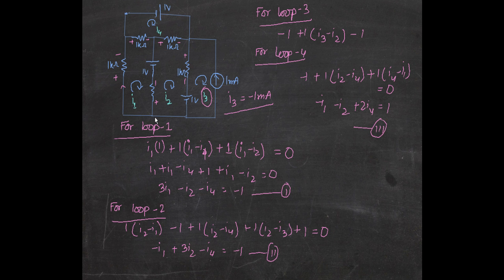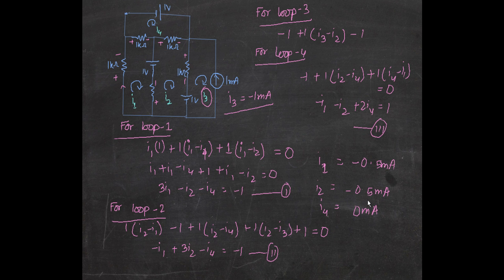Now, to find the current in each loop — I1, I2, and I4 (since I3 is already found) — we apply Cramer's Rule using a determinant matrix in the numerator and denominator. I'll link the Cramer's Rule video below. The final answers are: I1 equals minus 0.5 milliampere, I2 equals minus 0.5 milliampere, and I4 equals 0 milliampere. Try solving it yourself with Cramer's Rule and check if your answers match.